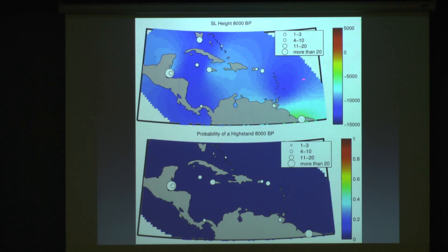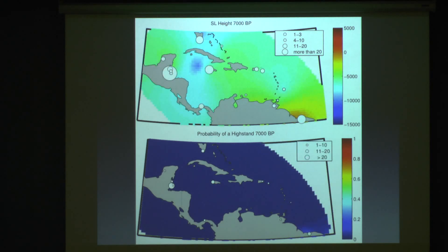8,000 years before present, we can see that most places in the Caribbean had sea level between negative 7 and negative 12 meters. Sea level was higher in Suriname and Guyana, and there is no probability of sea levels higher than present anywhere in the Caribbean region. Moving forward to 7,000 years before present, we can see sea level rising in most of the Caribbean to around 5 to 7 meters below present in most locations. We can start to see at this time sea level is close to present level in Suriname and Guyana. Looking at the probability of sea level higher than present, we see again there's no evidence for a high stand in the Caribbean.